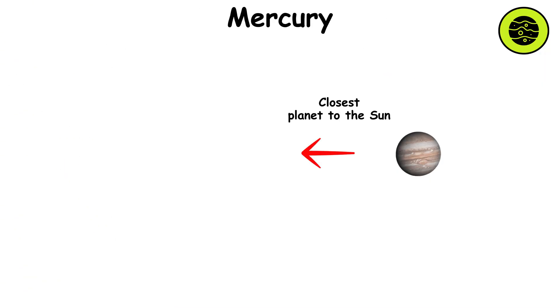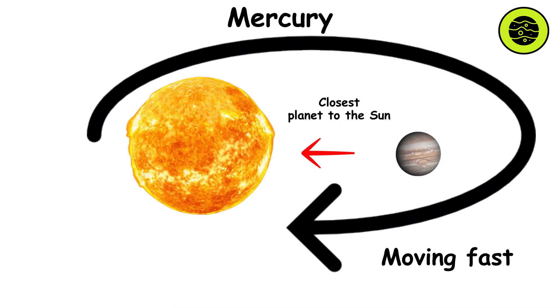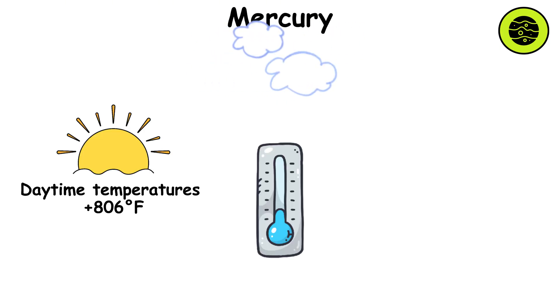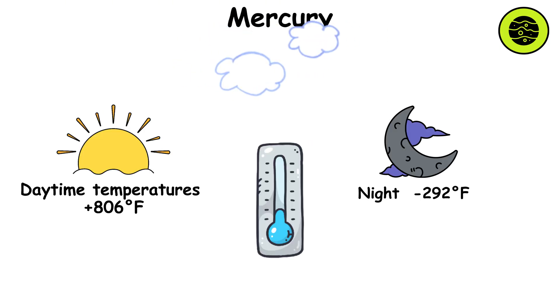Mercury is the smallest and closest planet to the Sun, moving faster than any other. Its year lasts only 88 Earth days. Due to its thin atmosphere, daytime temperatures reach plus 806 degrees Fahrenheit, while at night it drops to minus 292 degrees Fahrenheit.